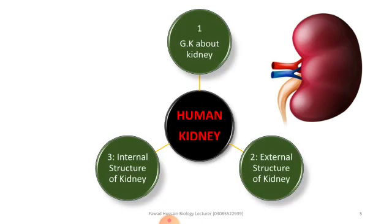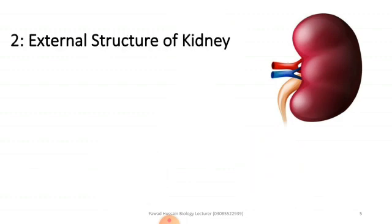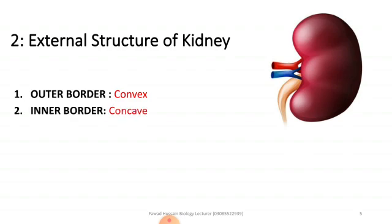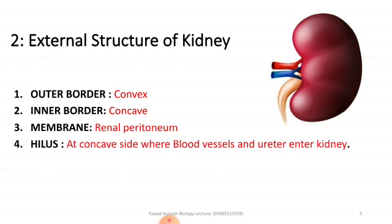The next point to be discussed is the external structure of the kidney. The first point is the outer border — the outer border of the kidney is convex. The inner border has a depression called the hilum. The membrane of the kidney is known as the renal peritoneum.